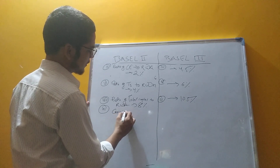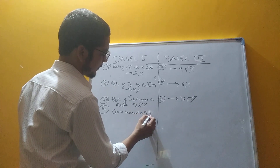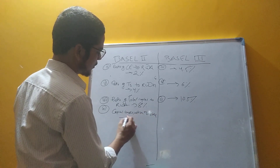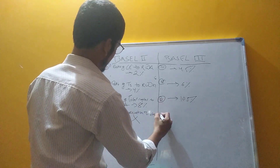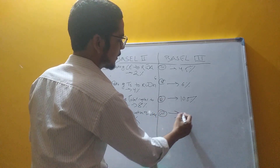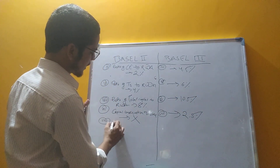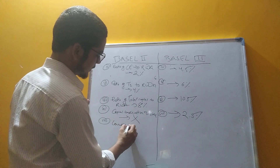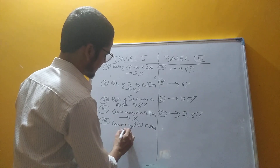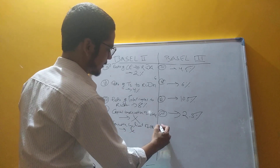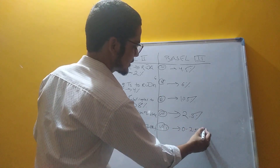Basel 3 introduces a Capital Conservation Buffer of 2.5%, which must be maintained. There is also a Countercyclical Buffer under Basel 3 in the range of 0–2.5% that must be maintained, whereas Basel 2 had no such provision.